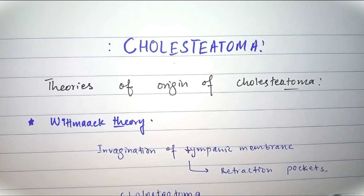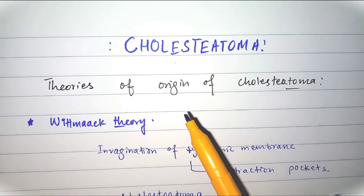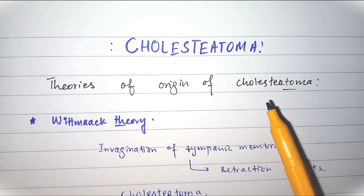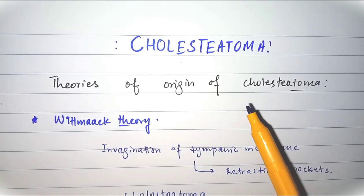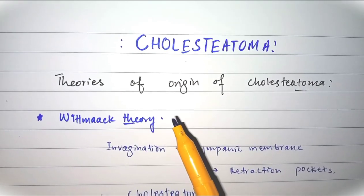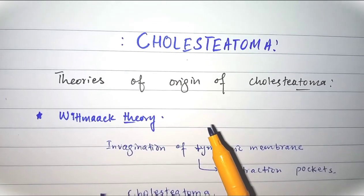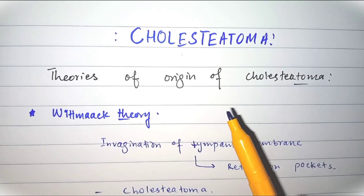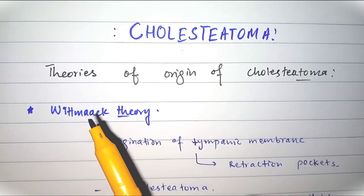Cholesteatoma is skin in the wrong place. In this video, I will tell you about some important theories for the origin of cholesteatoma — how skin comes to be present in the middle ear. The middle ear cleft is lined by different types of epithelium in different regions: ciliated columnar epithelium in the inferior and anterior parts, cuboidal in the middle part, and pavement-like epithelium in the attic part. So there is normally no skin in the middle ear, but when skin appears there, that is called cholesteatoma.